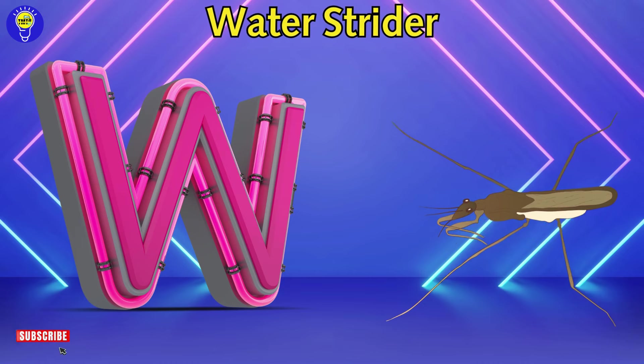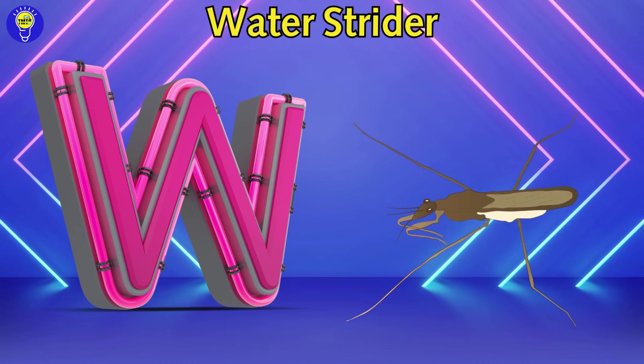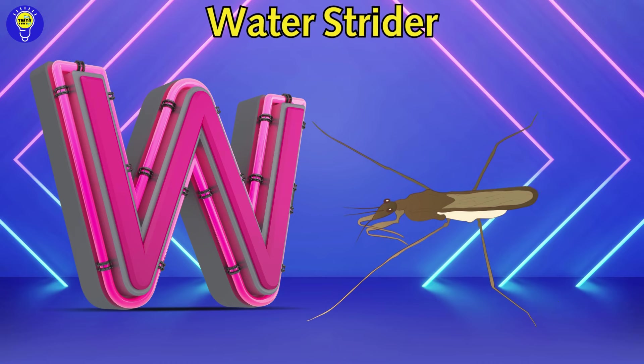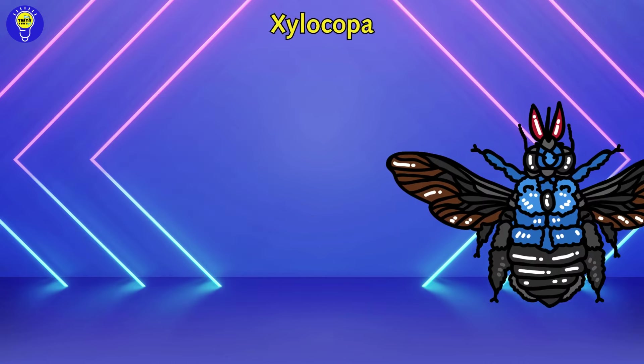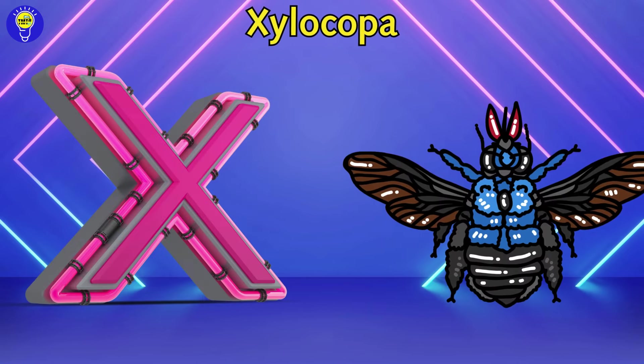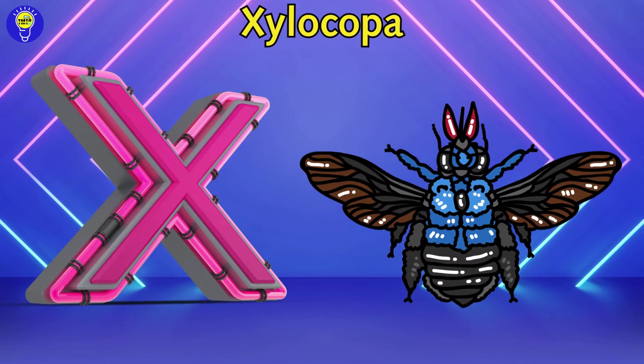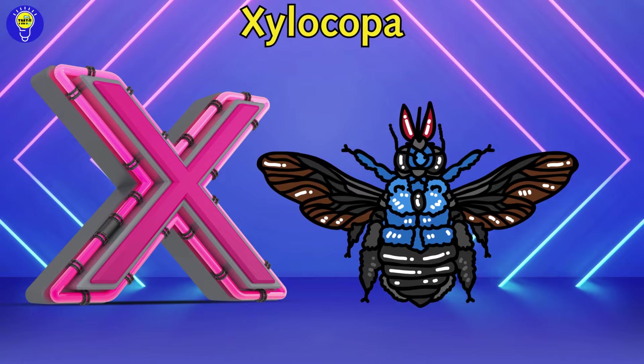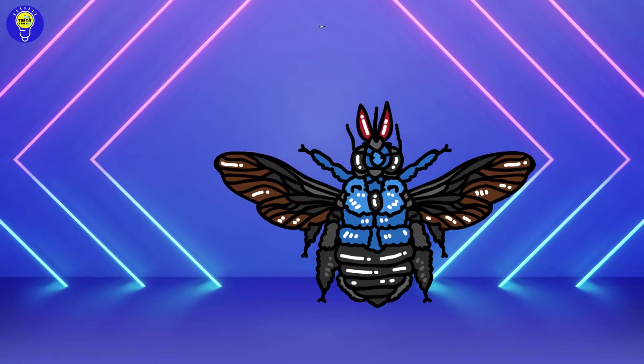W is for water strider. w, water strider. X is for xylocopa. x, xylocopa.